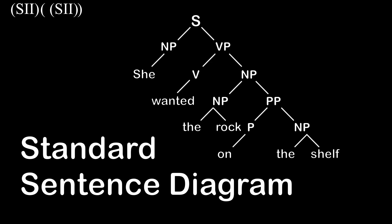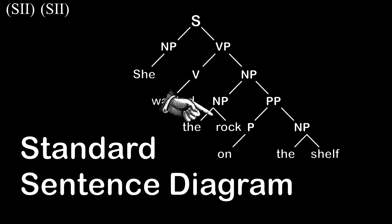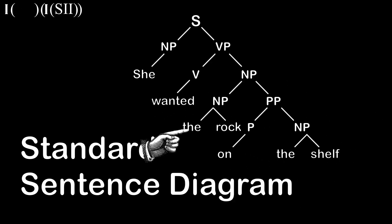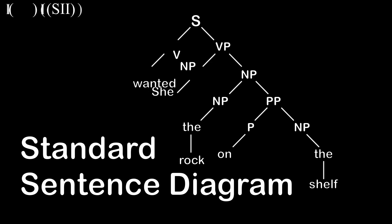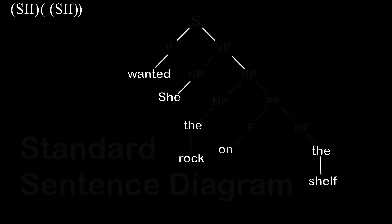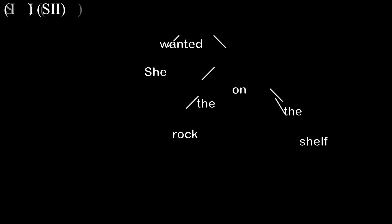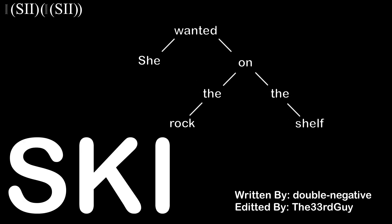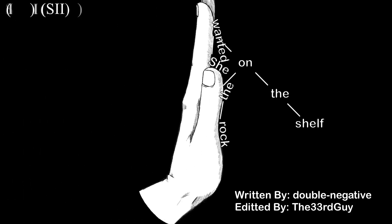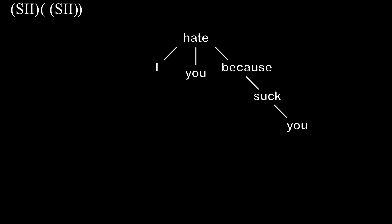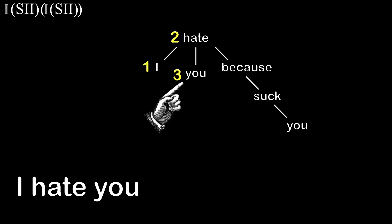If we take a little inspiration from programming languages, we might have the idea to front load the verb. Instead of modifiers going next to what they modify on the tree, we put them inside the nodes, higher up than the words they modify. We'll front load verbs, and nouns come beneath. With this system, sentence diagrams look more like this. Let's replace it with something easier. Interpreting this with verbs and modifiers before the nouns, this would read: I hate you because you suck.